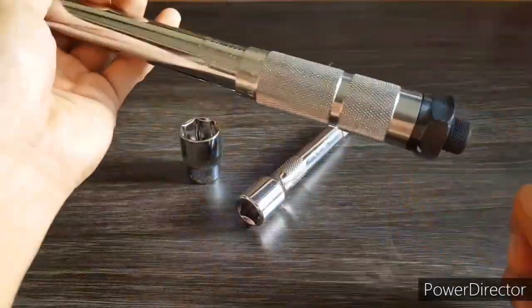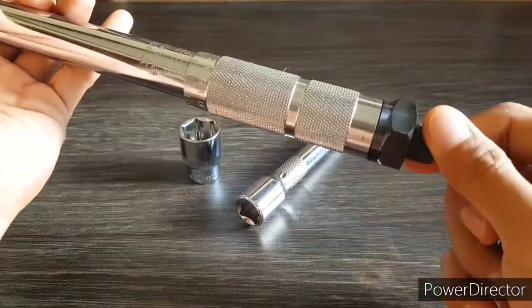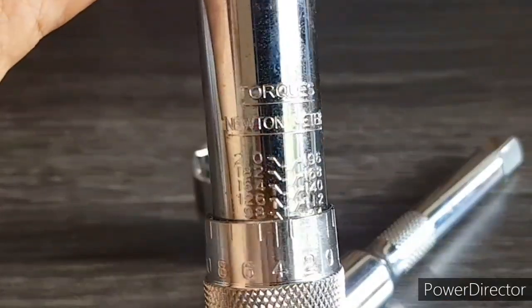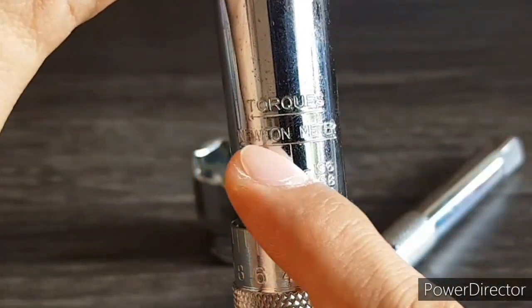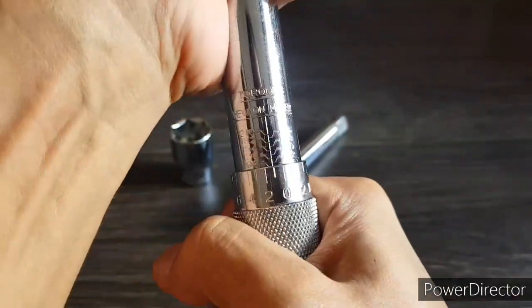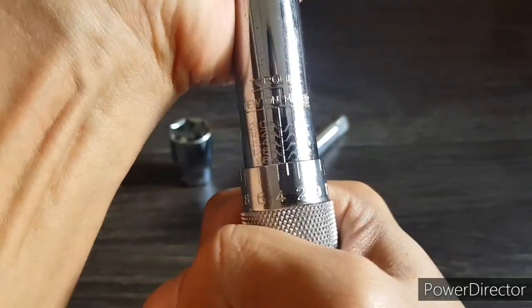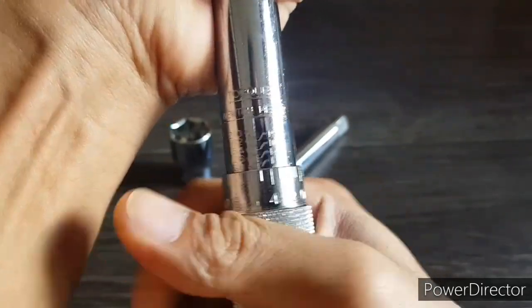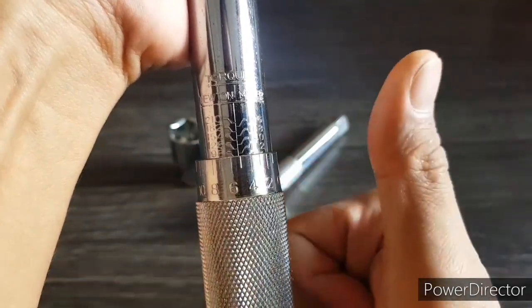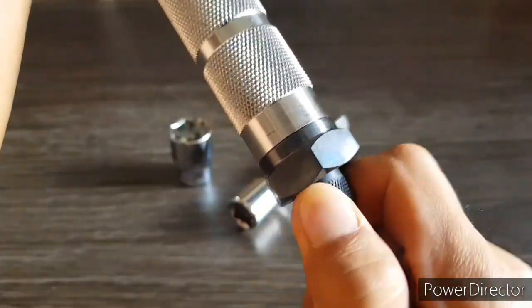Start by turning the adjust screw counterclockwise. Then choose the unit of torque that you want to use. For this video, we'll be using the Nm. Proceed to adjust the torque scale until we reach the suggested torque from our manual.